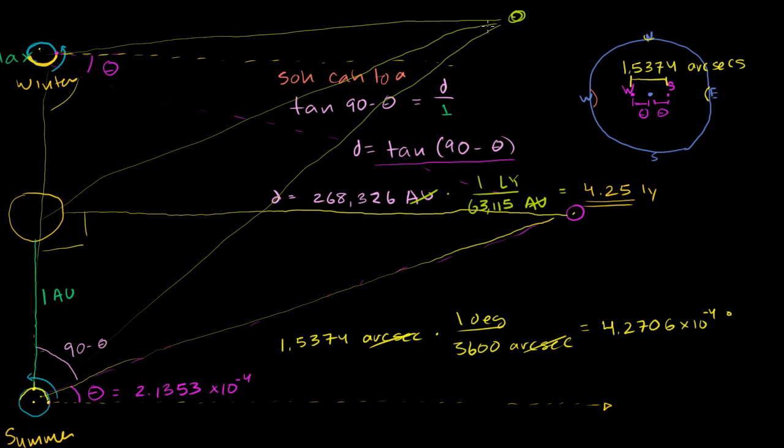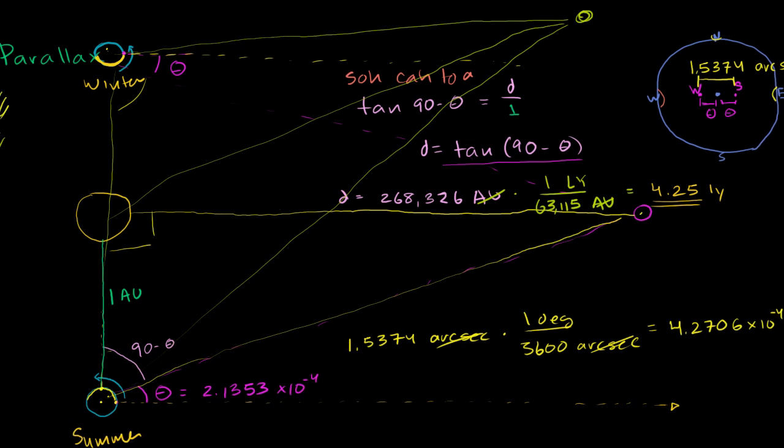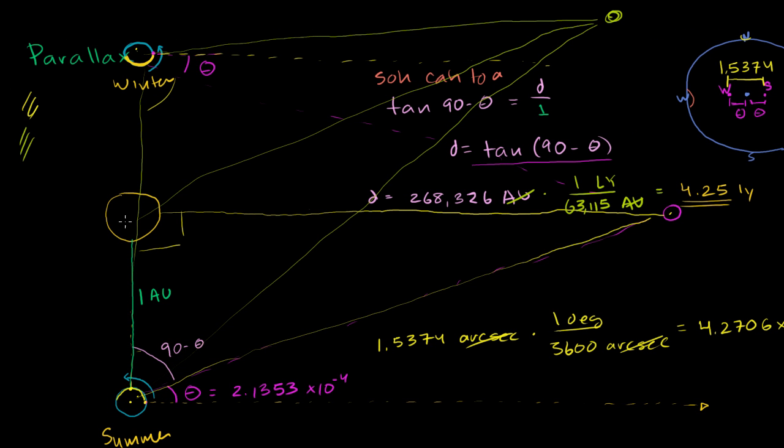In order to calculate this and still have an isosceles triangle, what you want to do is pick two different points six months apart. So if this is the sun, you want to pick two different points six months apart where it does form an isosceles triangle.